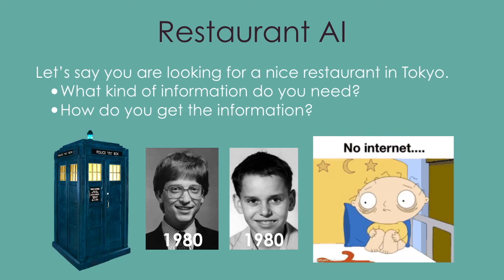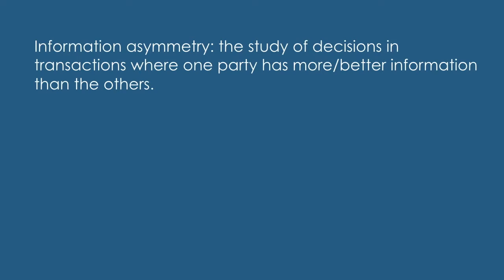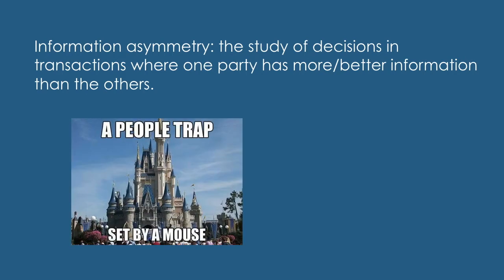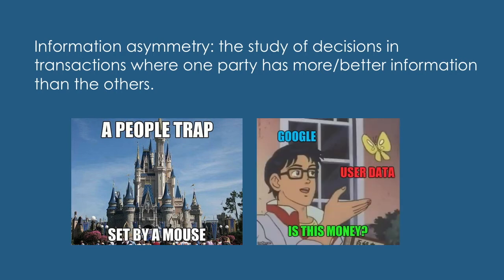Who has the information? Local residents living nearby, perhaps? The restaurant owners themselves. Economists call this phenomenon information asymmetry. It deals with the study of decisions in transactions where one party has more or better information than the others. If Disney built a media empire by making talking animals, Google built a media empire by addressing the issues of information asymmetry.